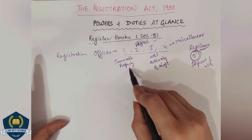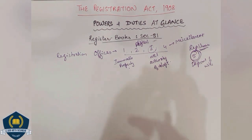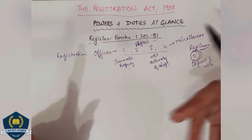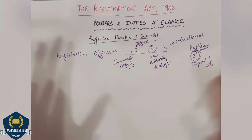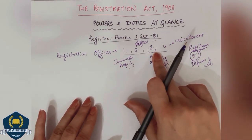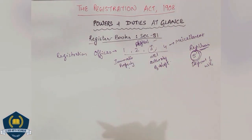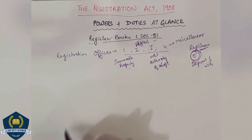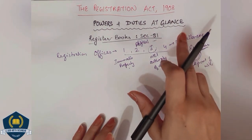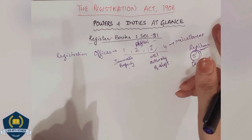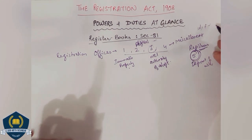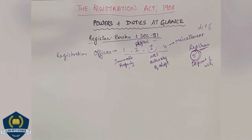Now, book number 1 is related to immovable property. In it, all documents are filed — entries are written — for those covered under sections 17 and 18 which relate to immovable property, but not wills. Wills go into book number 3. All immovable property documents except wills come into book number 1. Your clauses D and F of section 18, which do not relate to immovable property, are also noted separately.